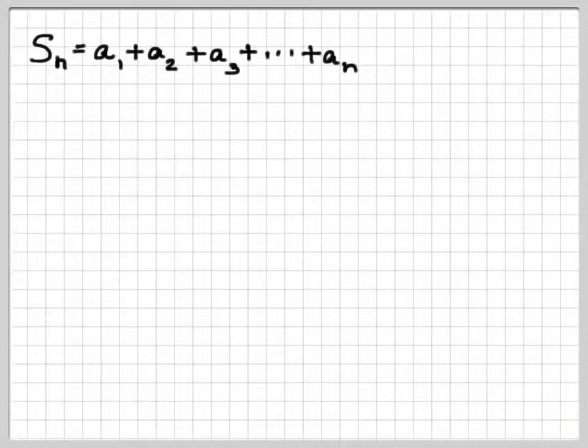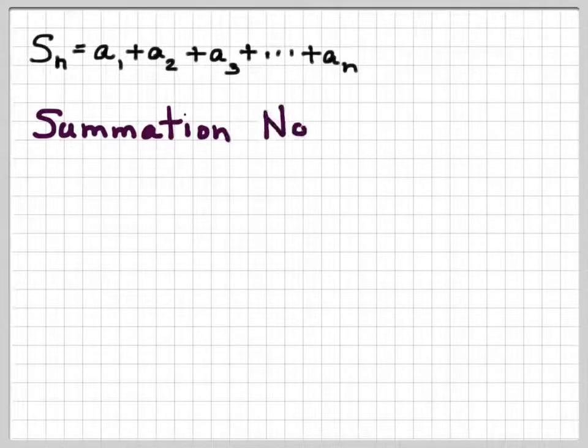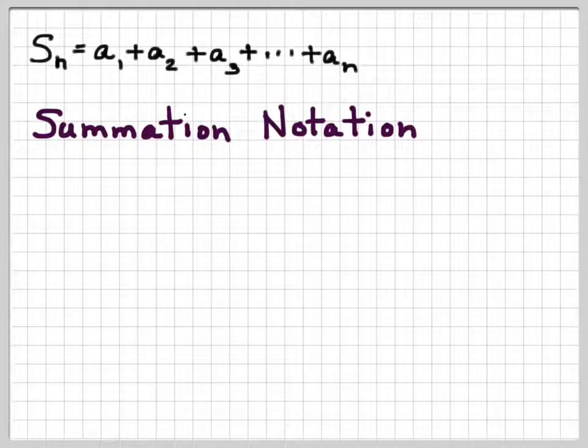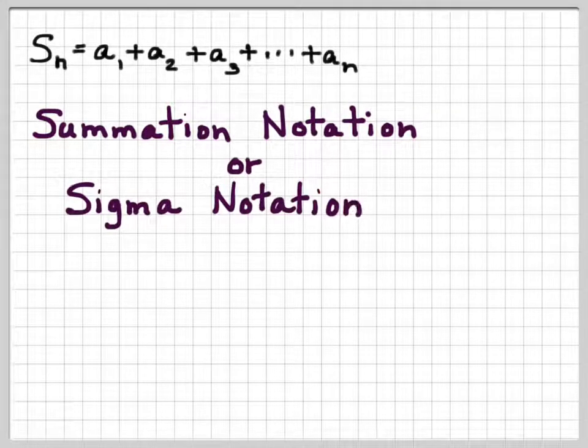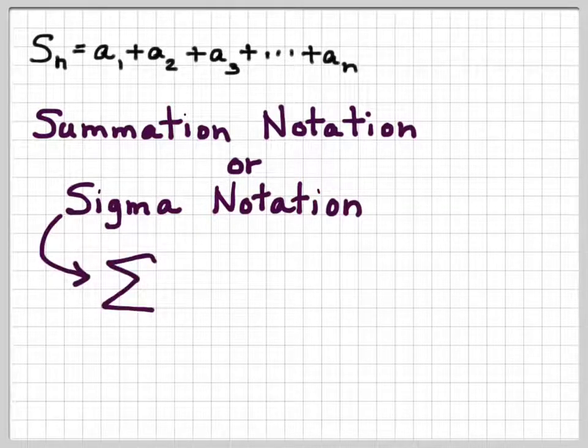So S sub n is going to be given by a sub 1 plus a sub 2 plus a sub 3, so on and so forth, up to a sub n. We can also use a shortened notation called summation notation. It's also called sigma notation, because we use the Greek symbol, the Greek letter epsilon, capital epsilon that looks like this.